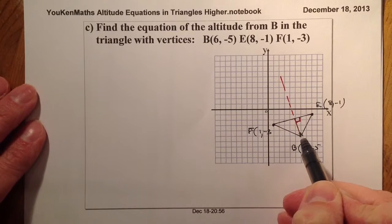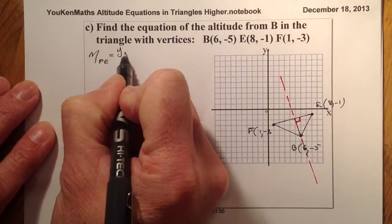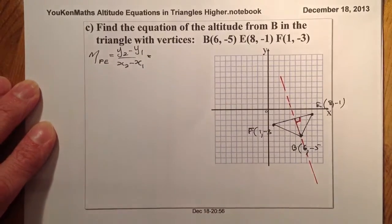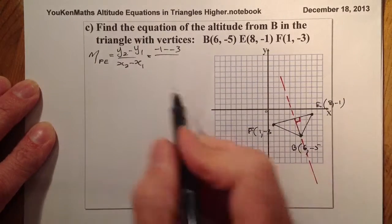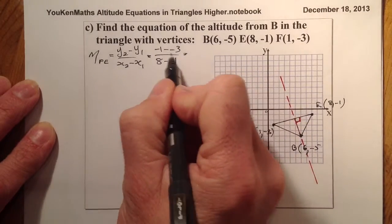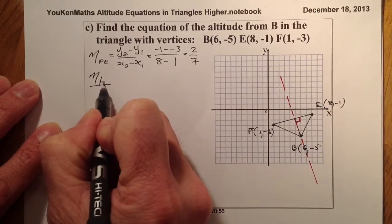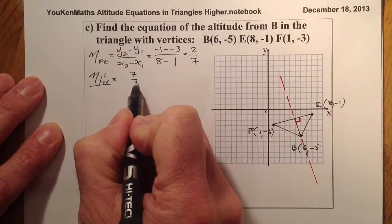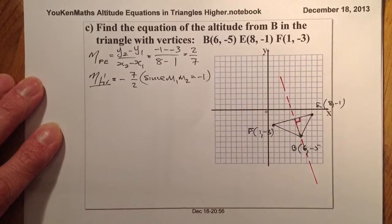Opposite point B, I find the gradient of FE: y2 - y1 over x2 - x1 = (-1 - (-3)) / (8 - 1) = 2 over 7. The gradient of the perpendicular line is: flip to 7 over 2 and change the sign, giving -7/2. This uses the rule that gradient 1 times gradient 2 equals -1.